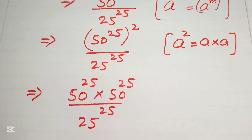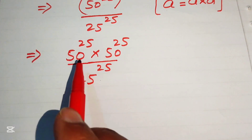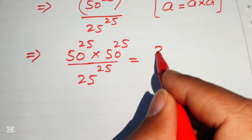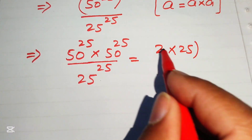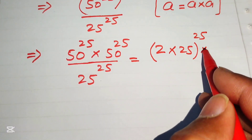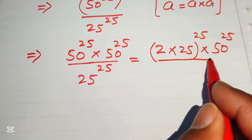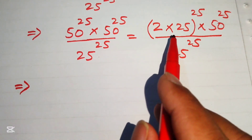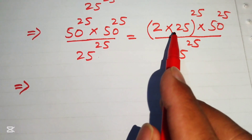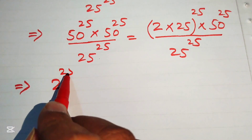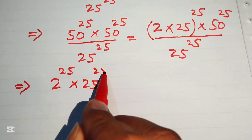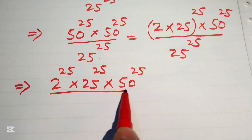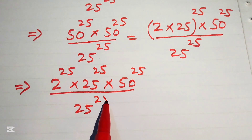Next, we break the base of this term. We write 50 as 2 times 25, so we have (2 times 25) to the power of 25, multiplied by 50 to the power of 25, divided by 25 to the power of 25. We then apply the exponent law (a·b)^m = a^m · b^m, writing this as 2 to the power of 25 multiplied by 25 to the power of 25, multiplied by 50 to the power of 25, divided by 25 to the power of 25.